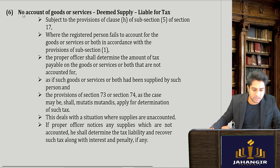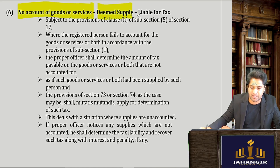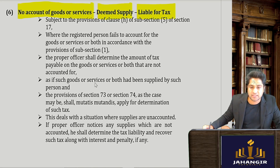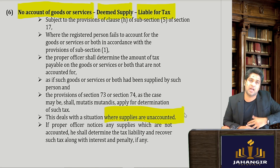Section 35 subsection 6 covers cases where supplies are unaccounted for. If goods or services are unaccounted, they are considered deemed supply and are liable for tax. For example, I have made purchases but there is no entry for sales — no invoices have been maintained.